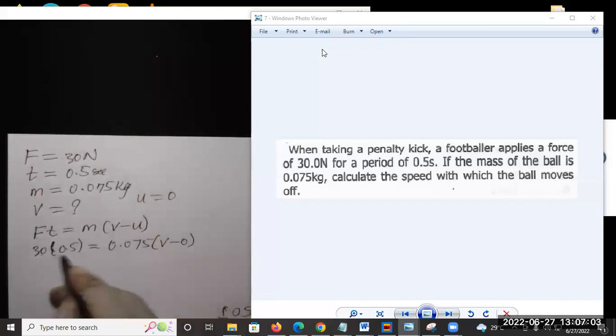30 times 0.5 gives us 15. Then we have 0.075 v. When you multiply, this has gone.